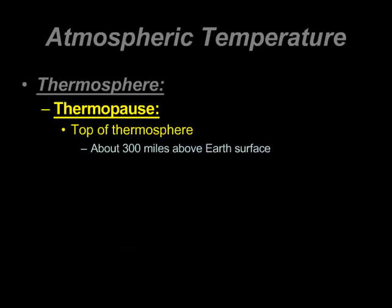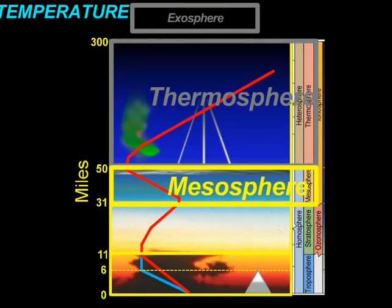One of the things we're going to see with each of these layers based on temperature is there's a specific barrier — a specific line that denotes the change from one sphere, one layer, to the next based on temperature. The first one is called the thermopause, which is the top of the thermosphere — about 300 miles above Earth's surface. Just below the thermosphere is the mesosphere.